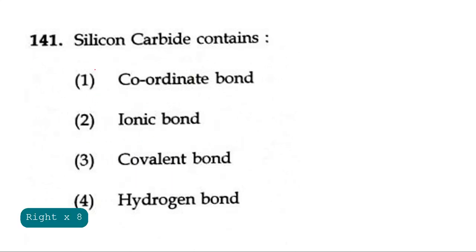Question 141: Silicon carbide contains coordinate bond, ionic bond, covalent bond or hydrogen bond? Silicon carbide structure is as follows: silicon with 4 carbons surrounding it—carbon, carbon, carbon and a carbon at the bottom. This is a tetrahedral geometry and there are very strong covalent bonds between the silicon and 4 carbons respectively. The correct answer for this question is covalent bond.